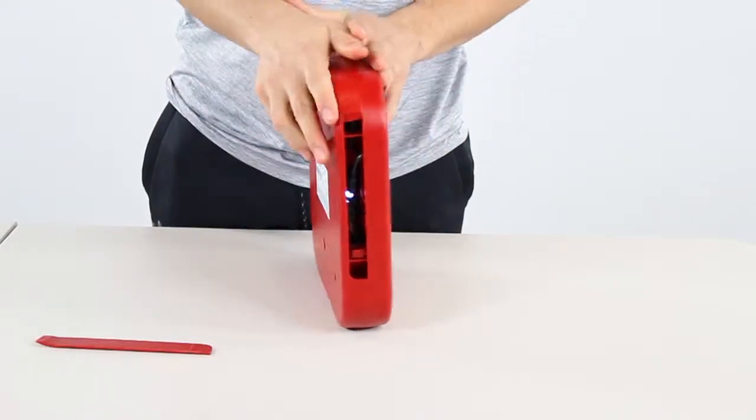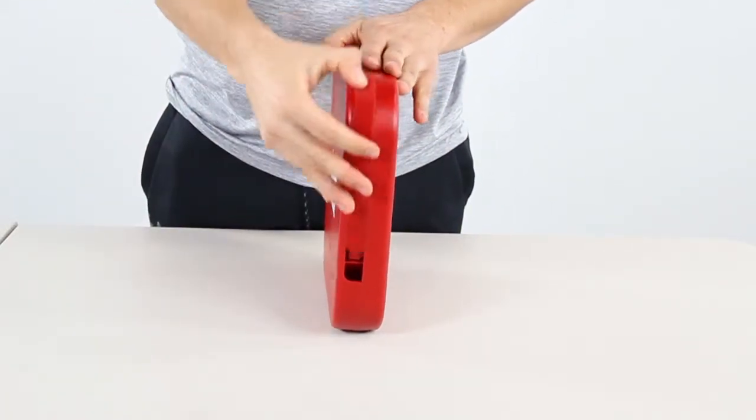Now locate the side cover that we removed earlier and slide it back on the strike pod.